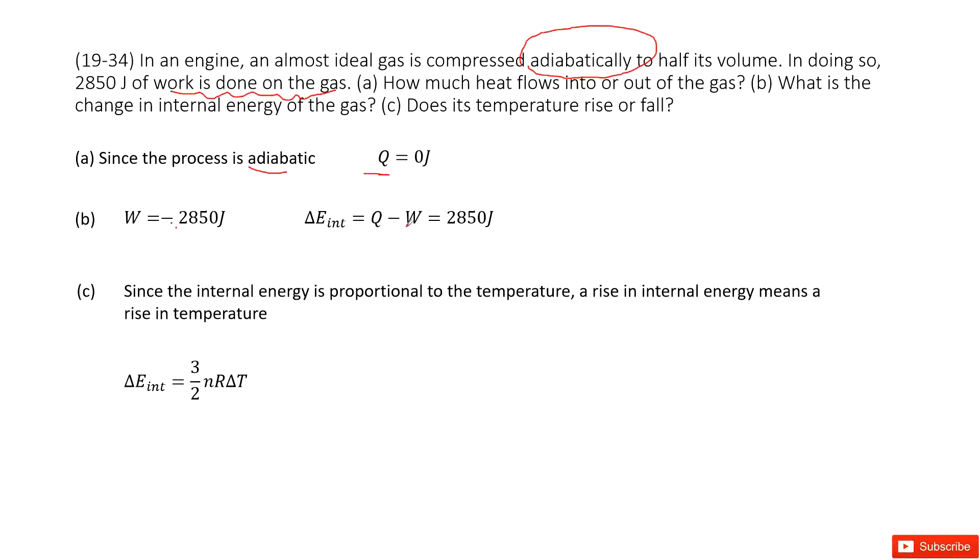In this way we find the change in internal energy, delta E internal, equals Q minus W. Q is zero, W is negative 2850, so the final answer is 2850.